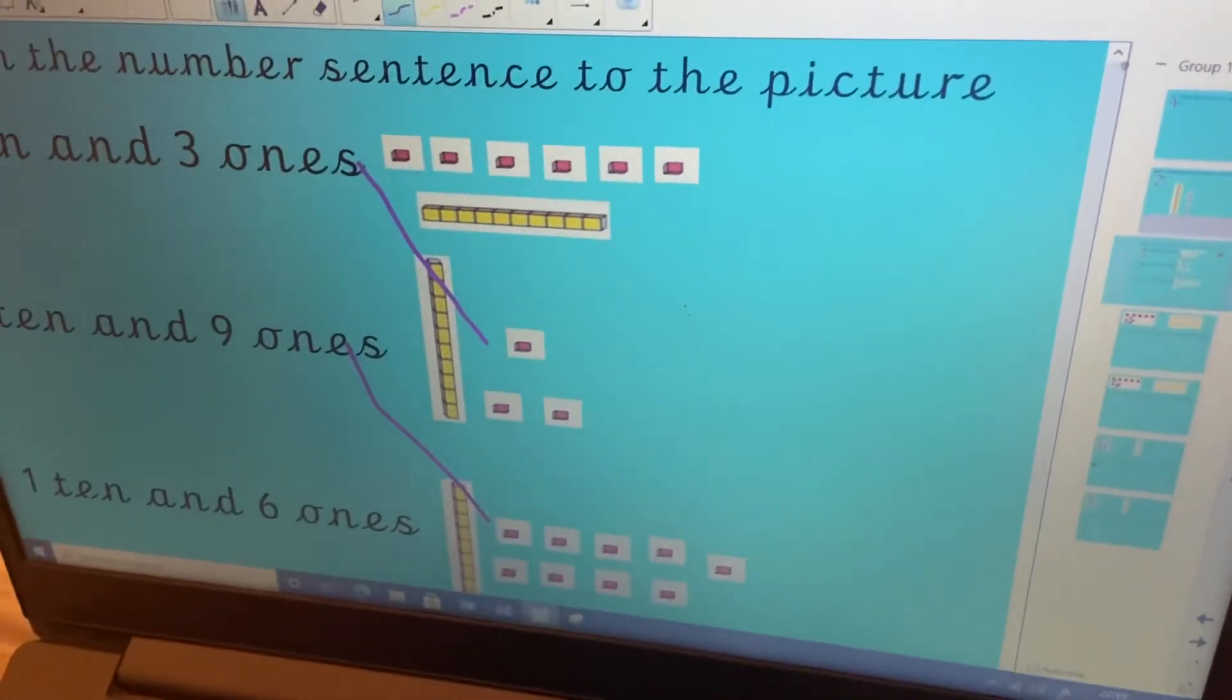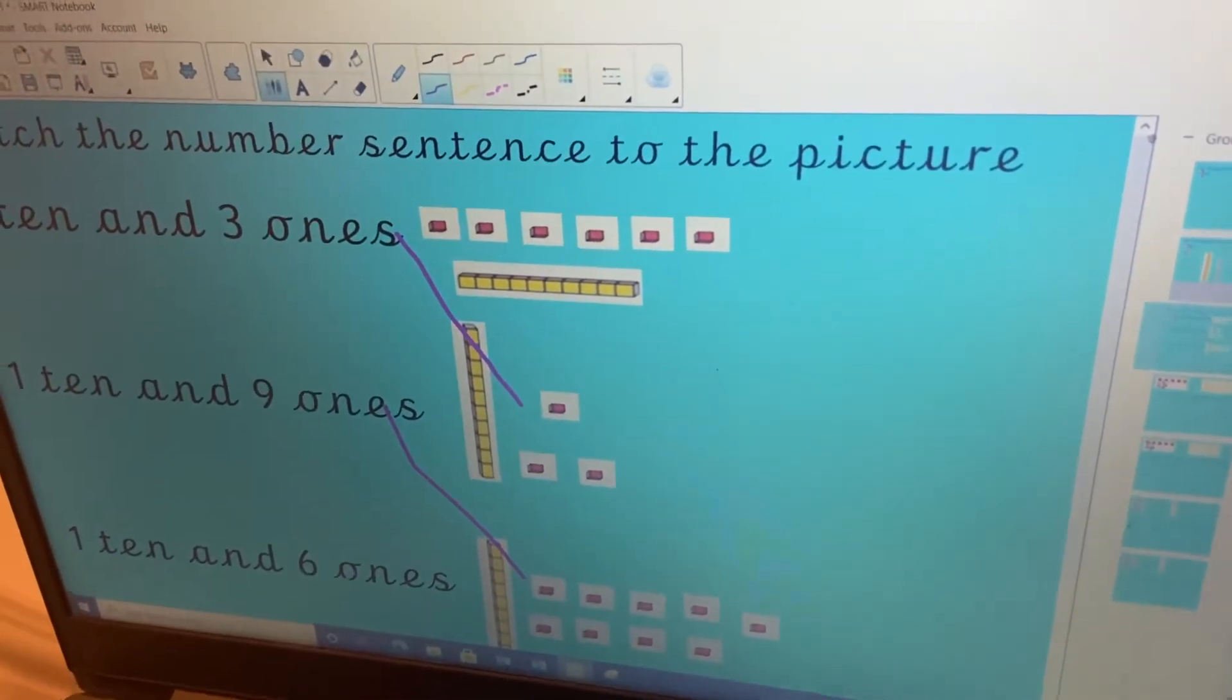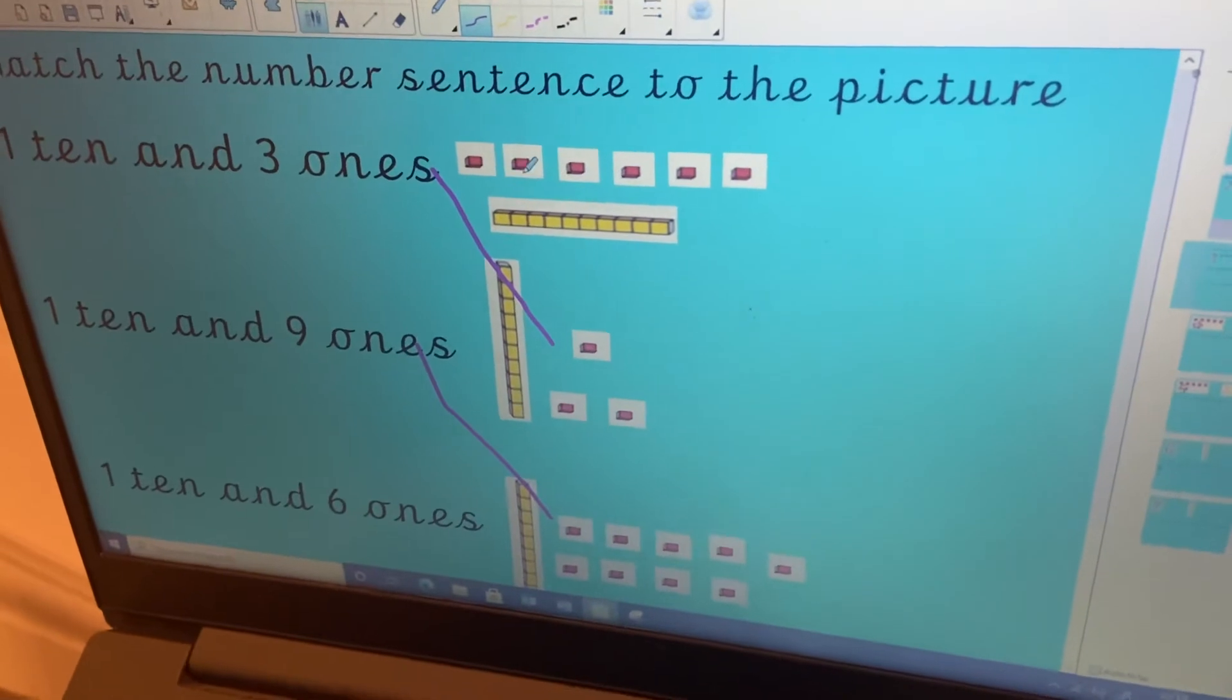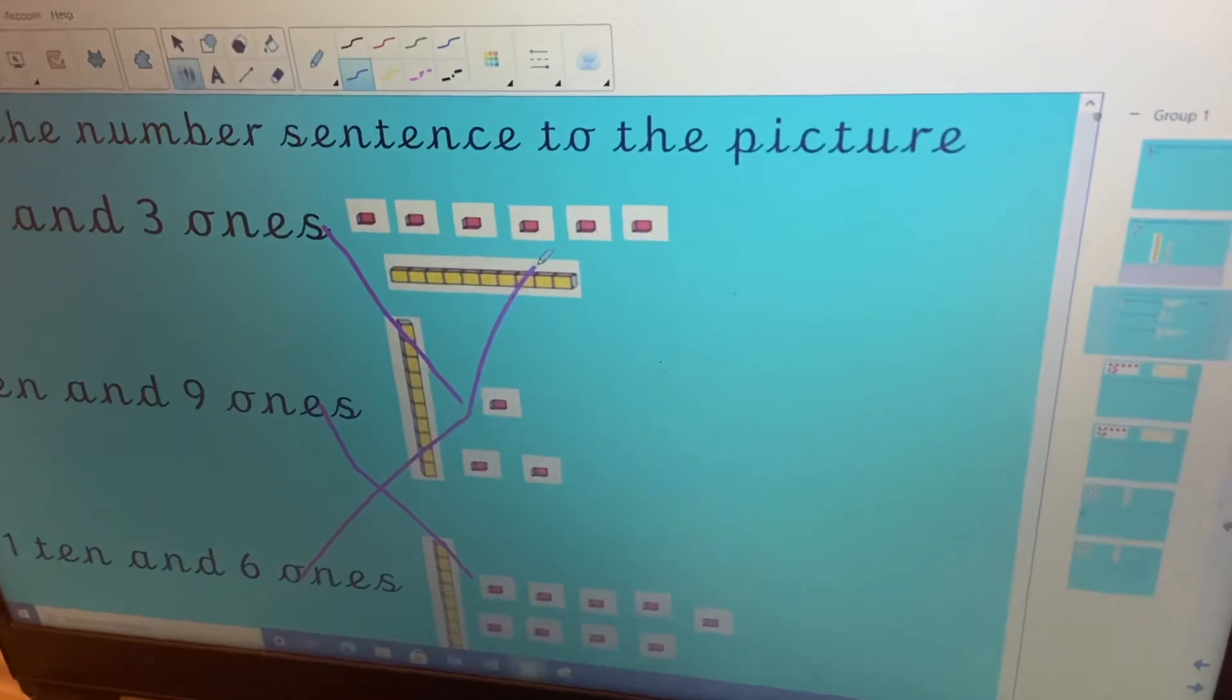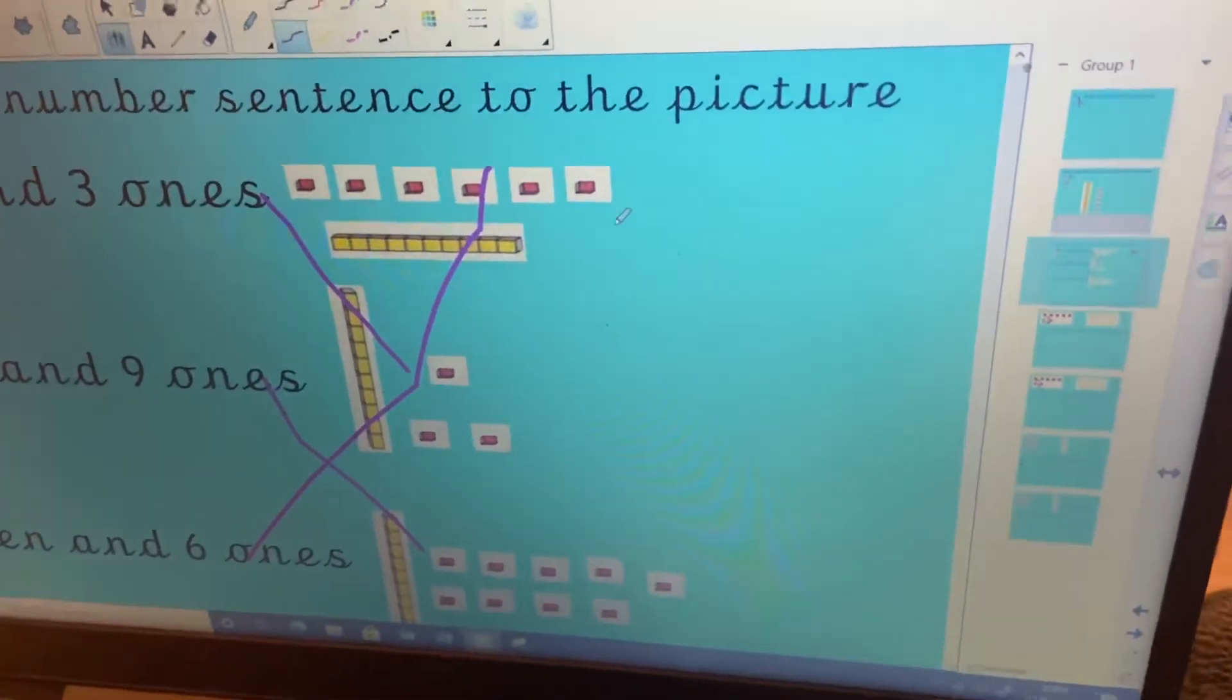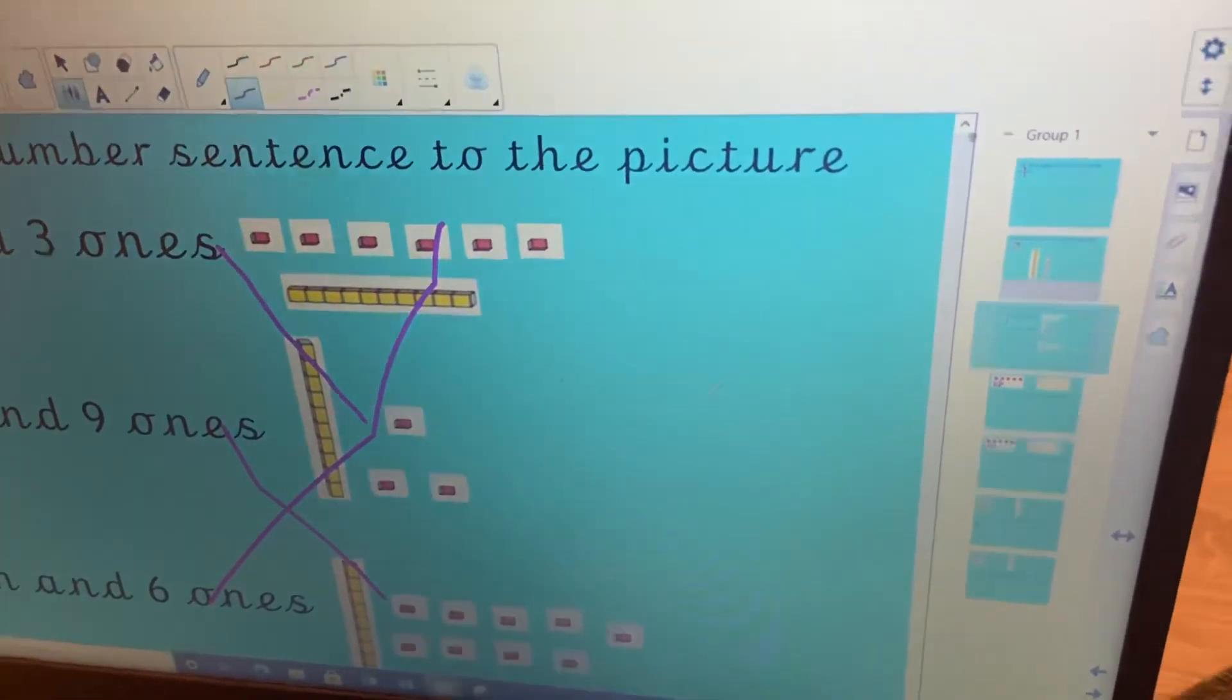Which must mean that this one says here, one ten and six ones. And it must go here. One, two, three, four, five, six. There we go. Did you get that one right? Oh, well done.